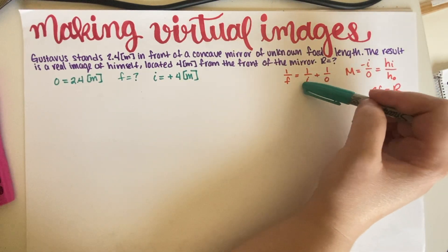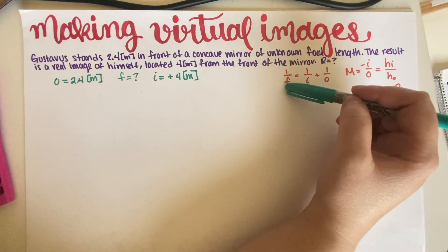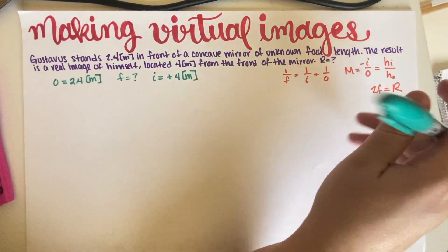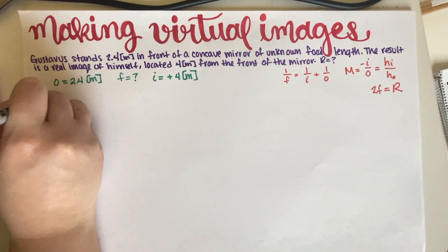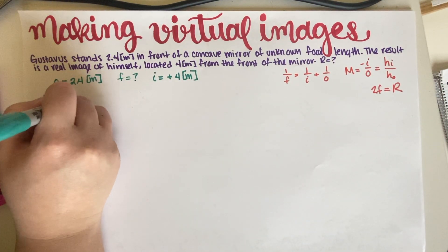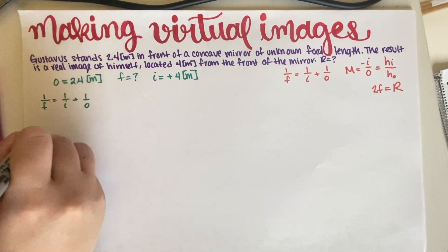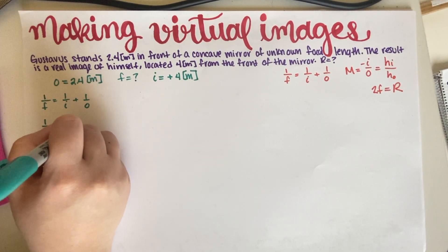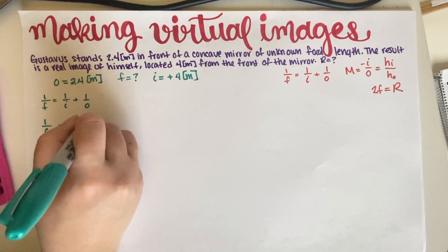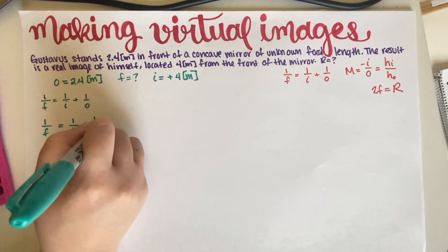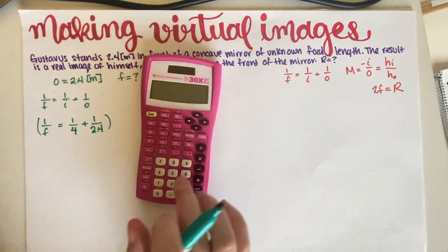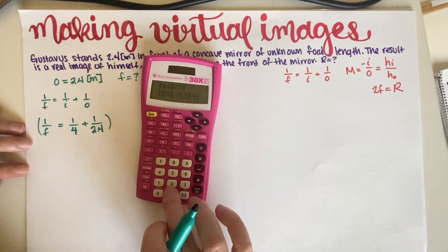So I'm just going to use this equation. I'm just going to straight up use this equation to find F, then multiply by 2, and that's it. Okay. So 1 over F is equal 1 over I, plus 1 over O. So 1 over F is equal to 1 over 4 plus 1 over 2.4.